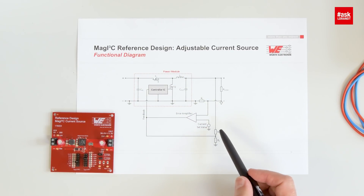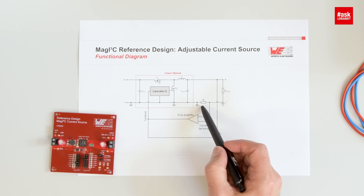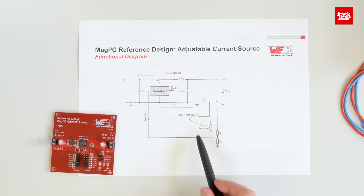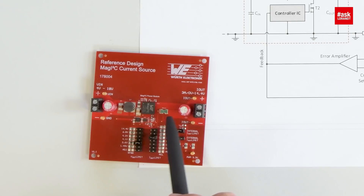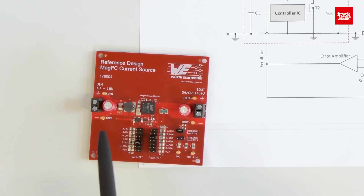We convert it into a current source by adding a shunt resistor and an operational amplifier. The shunt resistor is here on the board, the operational amplifier is here, and with this we have an additional control loop that maintains the constant current.